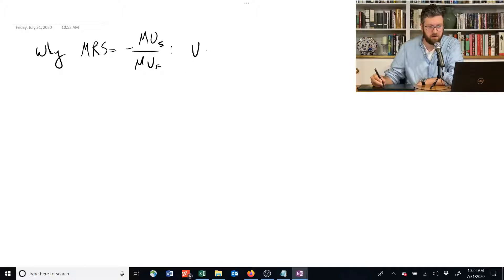We're going to start by saying our utility function looks like this: U = u(f,s). We fix it at some level u bar, and that now is an equation for our indifference curve. It's all the combinations of food and shelter that give us u bar utility. That's the amount of utility.